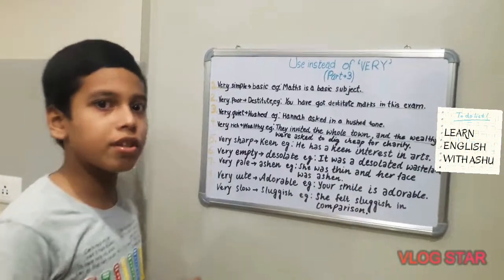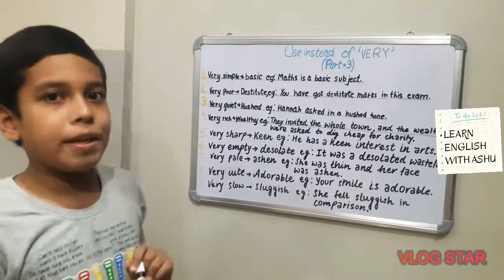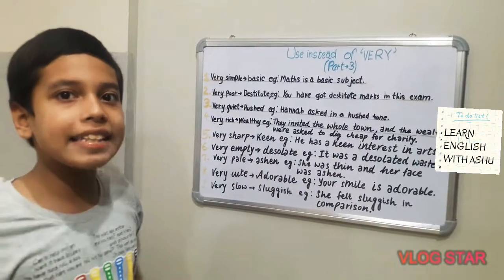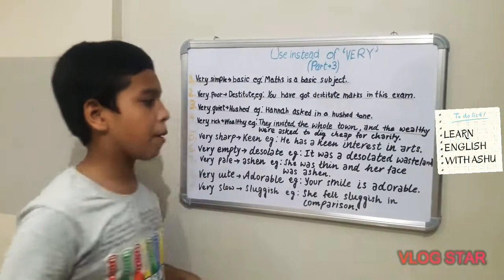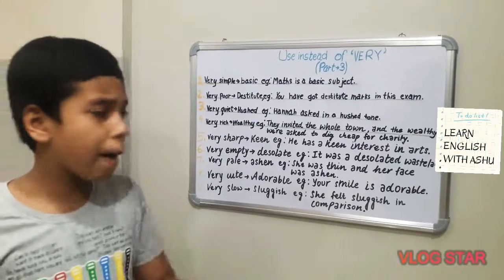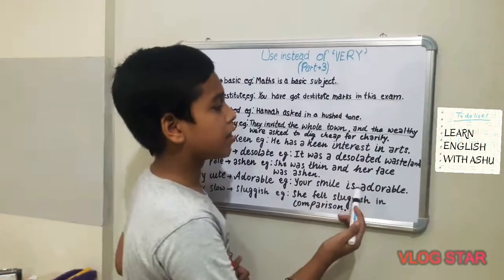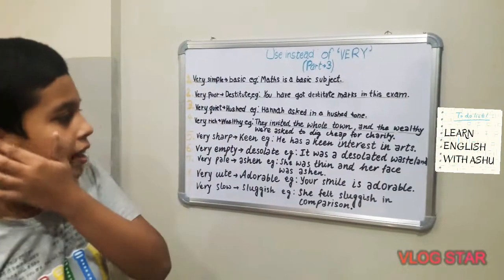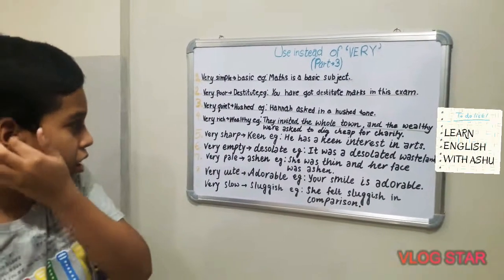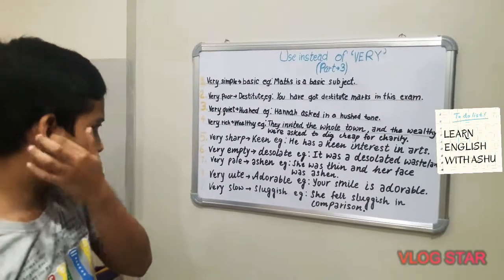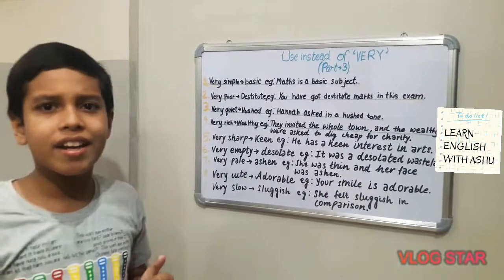Our next word is 'very empty.' Instead of very empty, we can say 'desolate.' For example, it was a desolate wasteland — it means that it was a very empty wasteland.